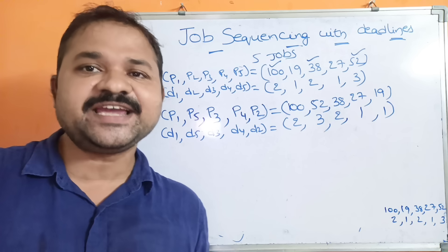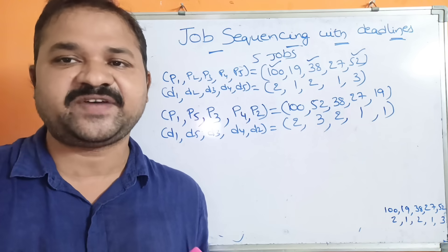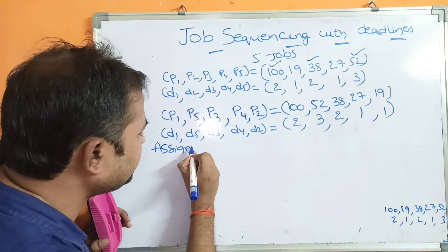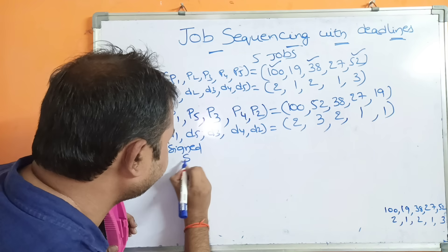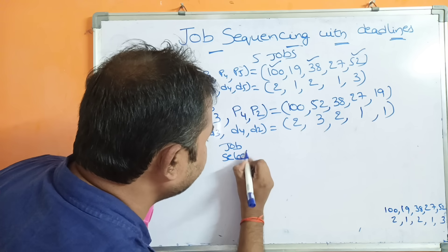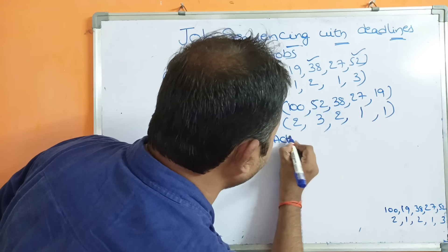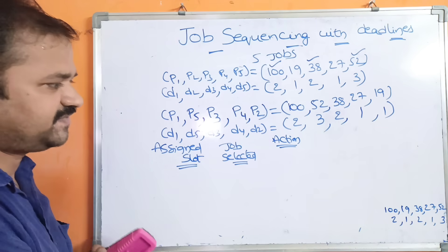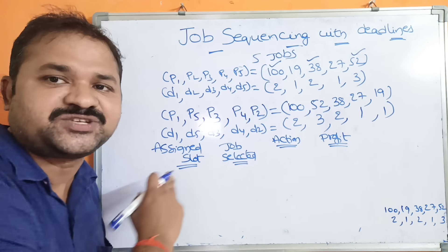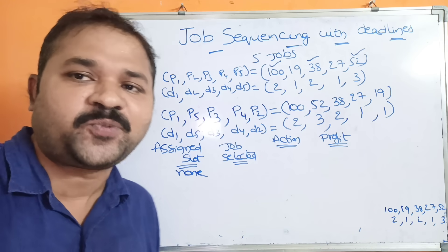Now we assign all jobs to the machine. We draw a table with four columns: assigned slot, job selected, action, and profit. Initially, no slot is allocated — written as 'none'.